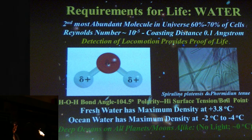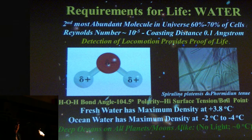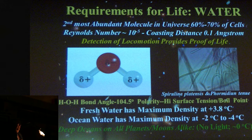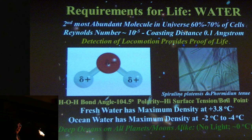Water is the second most abundant molecule in the universe, and it comprises 60 to 70 percent of cells. The Reynolds number for a bacterium in water is of the order of 10 to the minus 5, which means that the coasting distance is about 0.1 angstroms, and the detection of true motility provides definitive evidence of life. Water has a hydrogen-oxygen-hydrogen bond angle of about 104.5 degrees, which provides the water molecule with polarity, giving high surface tension and high boiling point.